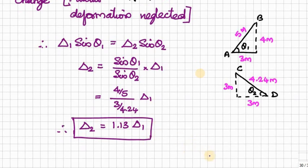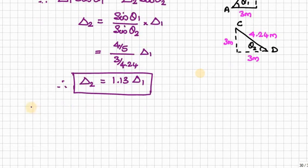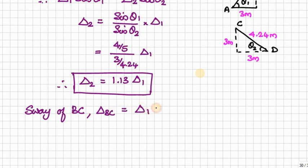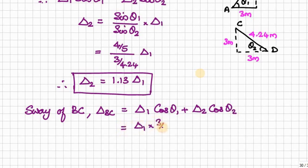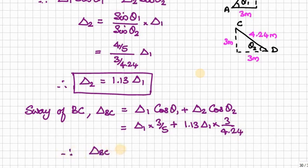So wherever we have delta 2, we can replace delta 2 by 1.13 delta 1. Now we have only one extra unknown, delta 1. Similarly, the sway of BC — that is, the settlement of BC, delta_BC — is equal to the vertical component of delta 1 plus the vertical component of delta 2, which means delta 1 cos theta 1 plus delta 2 cos theta 2. Finally, we get delta_BC equals 1.40 delta 1.